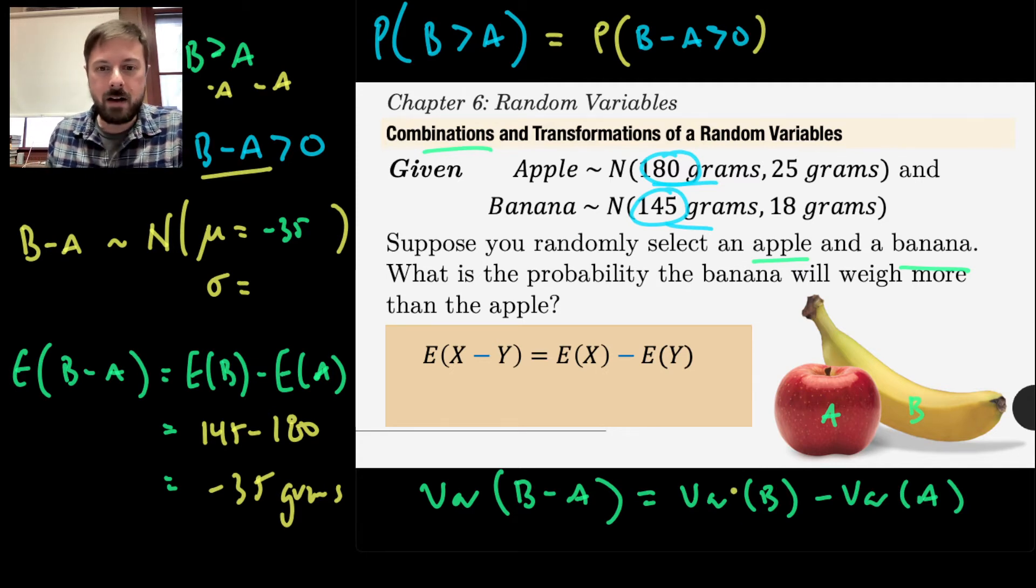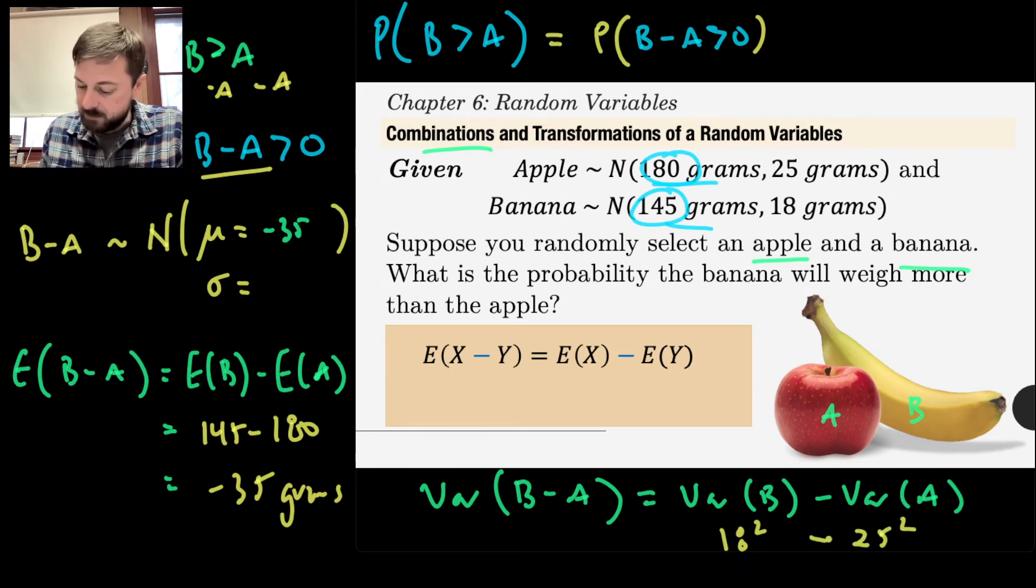Just like we learned in another lesson that the sum of two random variables means sum the variances, maybe since I'm subtracting here, I'll just subtract those two variances. And if you were to do that, what would happen? Guess what? That's wrong. Your intuition is wrong. But think about why. If you did the variance of B minus the variance of A, the variance of B would be 18 squared, the variance of A would be 25 squared, and then you'd subtract them. And what would you get? A negative number.